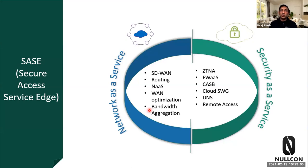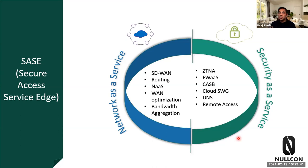SASE is a convergence of two aspects: networking and security, bundled together as one architectural model. On the networking side, components include SD-WAN, routing control, optimization, and bandwidth aggregation. On the security side, SASE components include Zero Trust network access, firewall as a service, CASB (Cloud Access Security Broker), secure web gateways, DNS, and remote access — all as a single integrated platform. Since SASE and Zero Trust are not exclusive, you can have Zero Trust as a component within SASE.